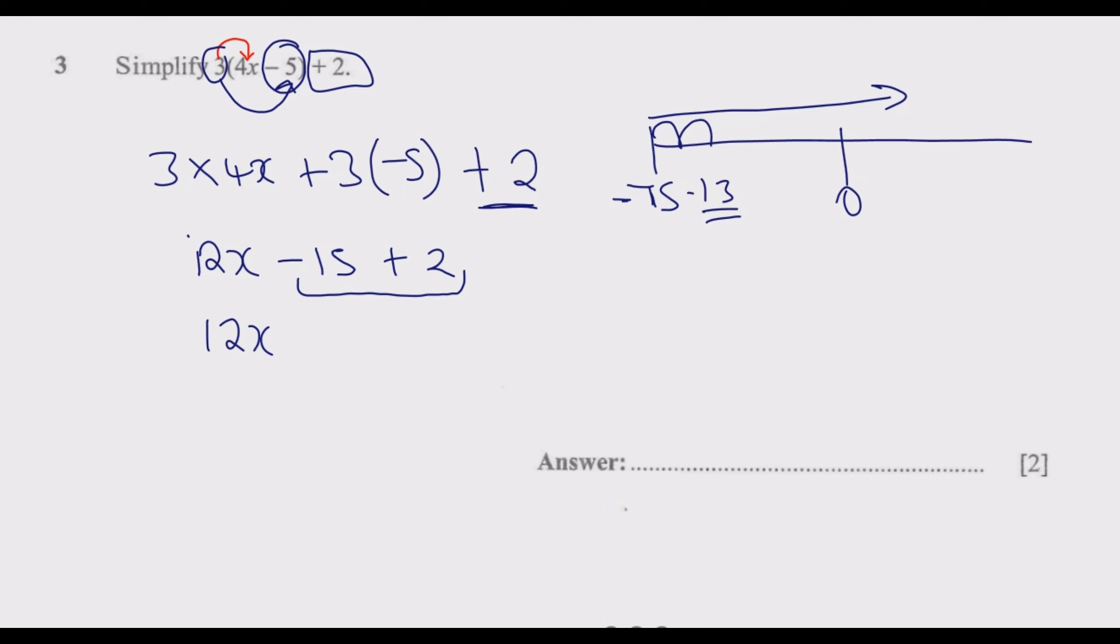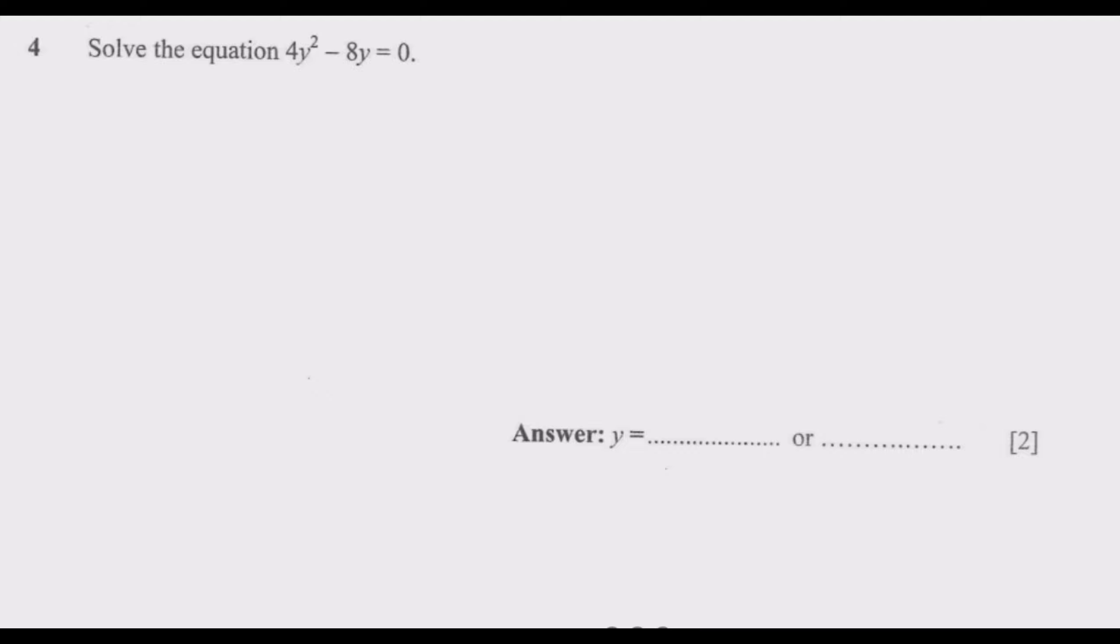This is the common mistake, people are just going to add 15 plus 2, they get 17 then write minus 17 which is incorrect. So this is basically negative 13. At this point there is no number that can go into 12 and 13 at the same time. So this is the simplified answer, 12x minus 13. Let us look at question 4.